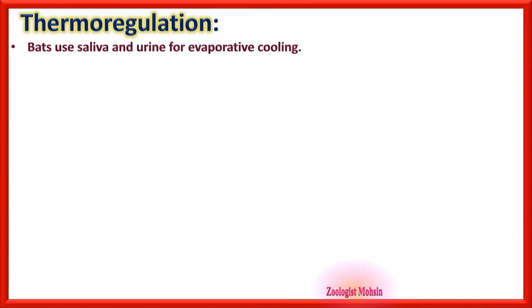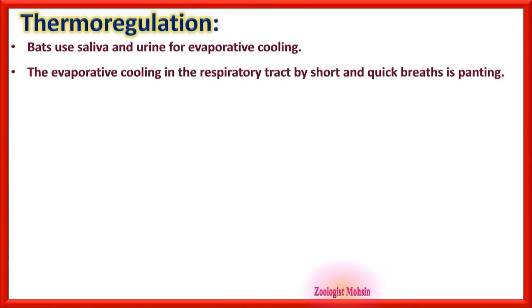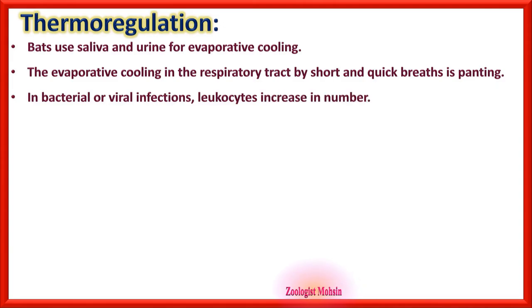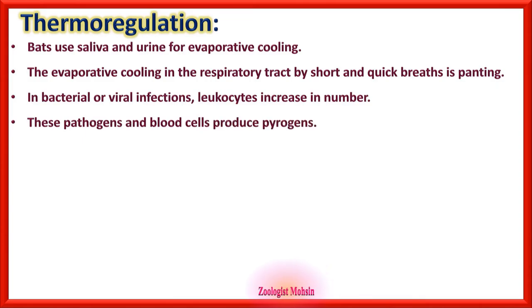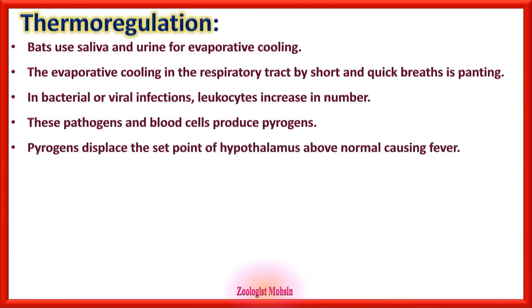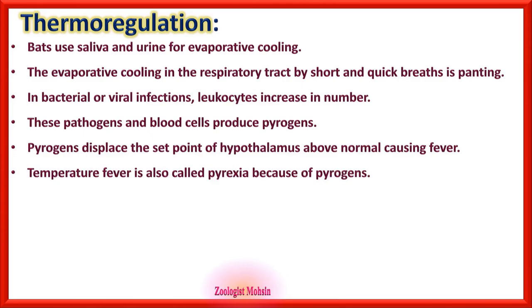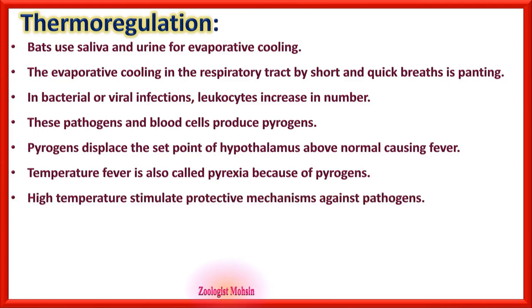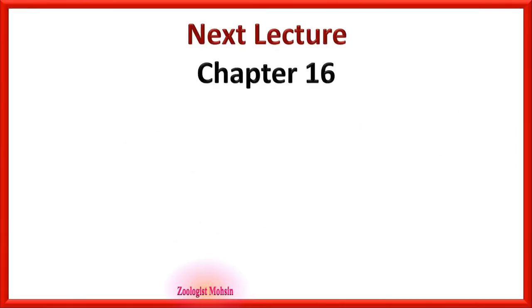Bats use saliva and urine for evaporative cooling. Evaporative cooling in the respiratory tract by short and quick breaths is called panting. In bacterial or viral infections, leukocytes increase in number; pathogens and blood cells produce pyrogens, which displace the set point of the hypothalamus above normal, causing fever. Fever is also called pyrexia. High temperature stimulates protective mechanisms against pathogens or kills them directly.